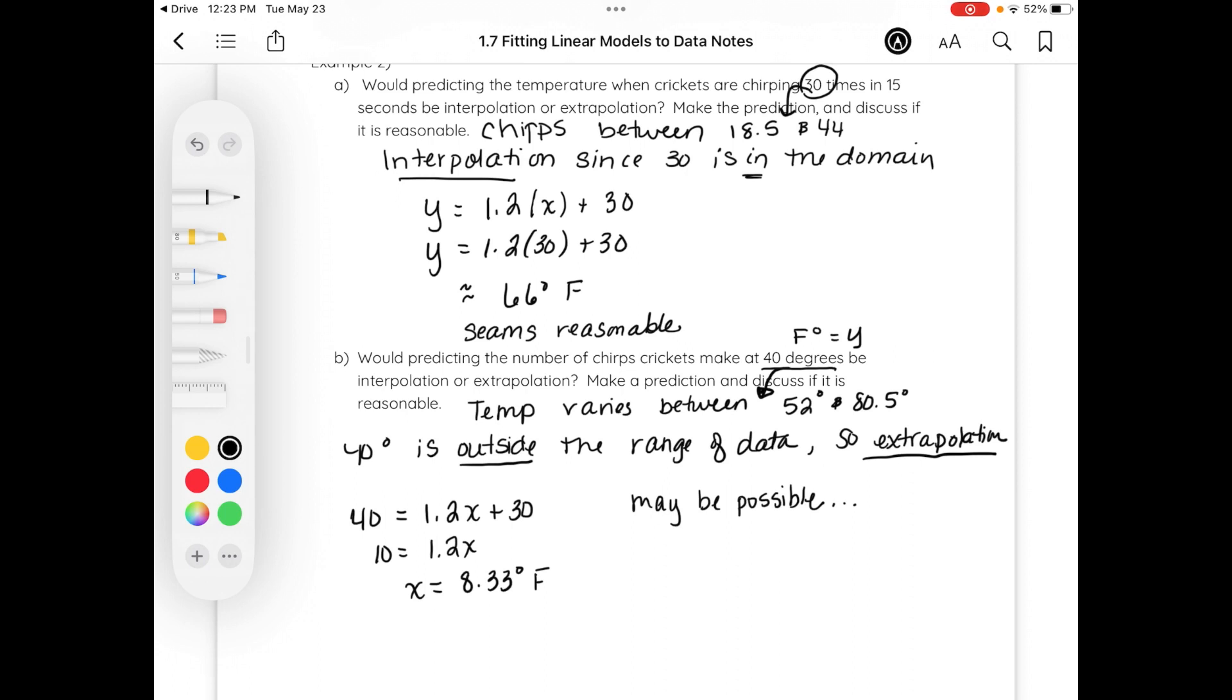So while it does seem reasonable, we don't have any reason to believe our model is valid outside of the domain and range. Again, that's model breakdown, and so we can't really say for sure that will happen, considering if you were to Google some items about crickets, they typically don't chirp under 50 degrees anyways. And so while the model may look correct, we don't have any reason to believe it's correct outside of the domain and range given. So be careful with the information that's given to determine if it's appropriate or not.